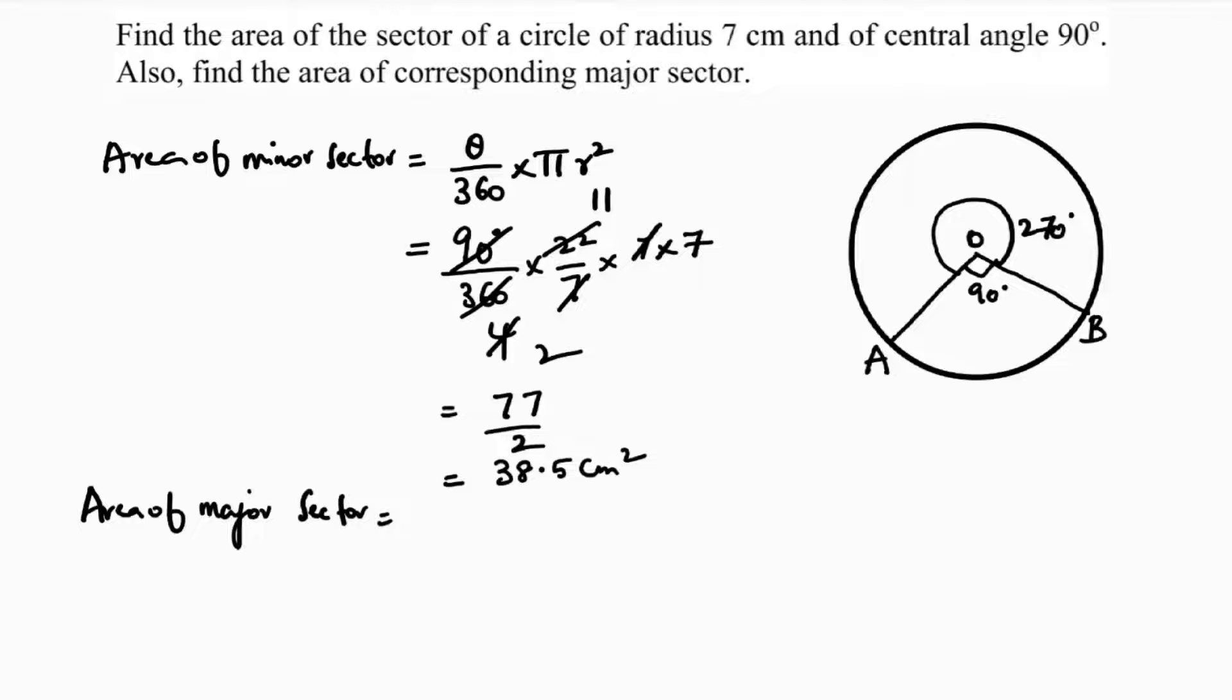Or you can calculate in this way: you can calculate the area of circle, from that take out 38.5, or directly you can use theta by 360 into pi r squared with 270 degrees.